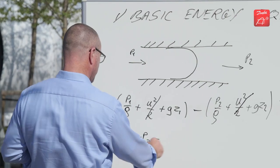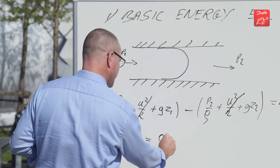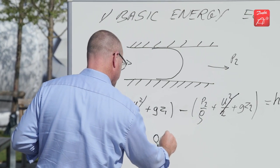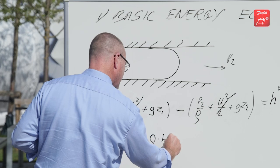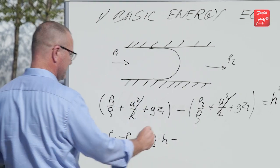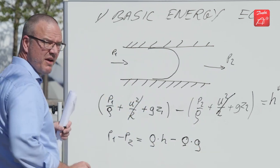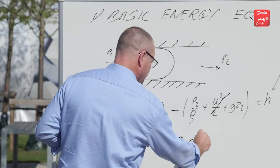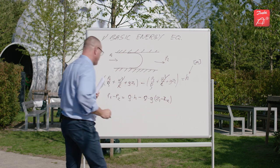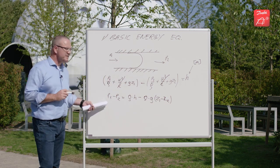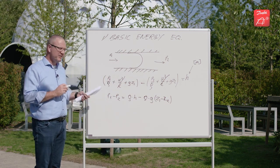And then we can write that the pressure in minus the pressure out equals the density times the head loss minus the density times gravity, and then we have the height difference. So this is the equation we're going to look at in the coming sessions.